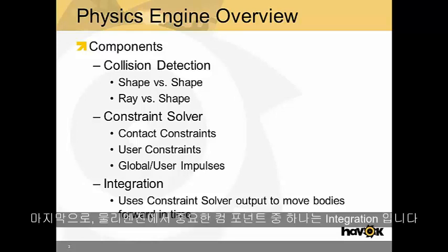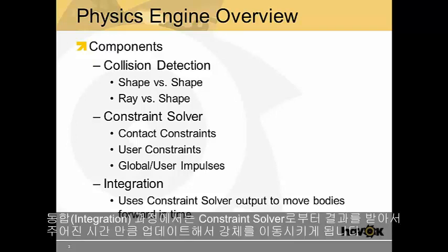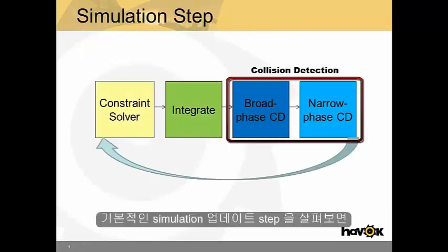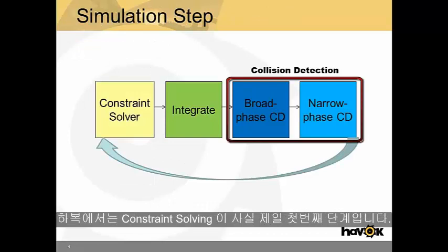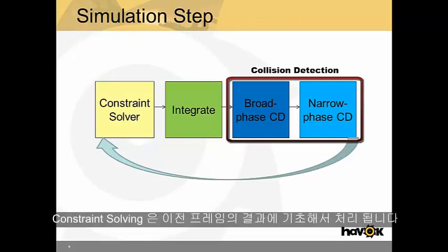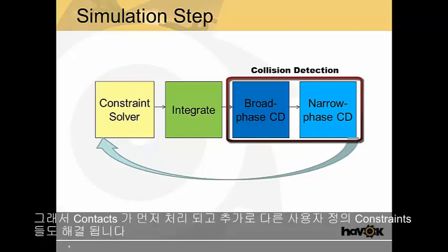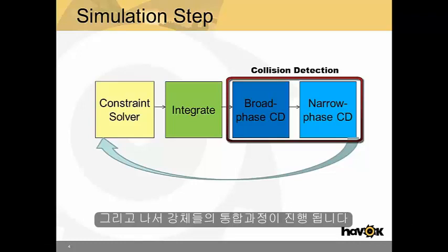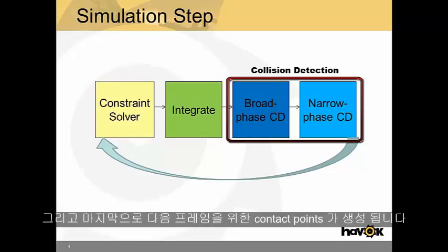The last main component of a physics engine is integration. Integration simply takes the output from the constraint solver and uses that to move the bodies forward in time. In Havok, the basic simulation step works as follows: constraint solving happens first based on output from the previous frame, so contacts are resolved along with any other constraints the user may have added. Then the bodies are integrated forward. Lastly, contact points are generated for the following frame.